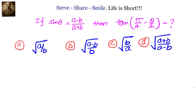Hello friends, welcome back. Hearty welcome to you. Let us look at this problem related to trigonometry — multiple and submultiple angles. If sin θ equals (a minus b) by (a plus b), then what is the value of tan(π/4 minus θ/2)? We have been given that sin θ equals (a minus b) by (a plus b), and we have to find the value of tan(π/4 minus θ/2).